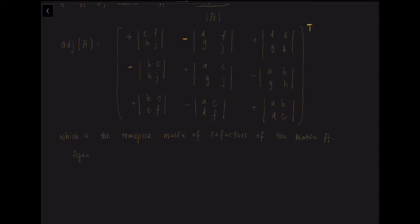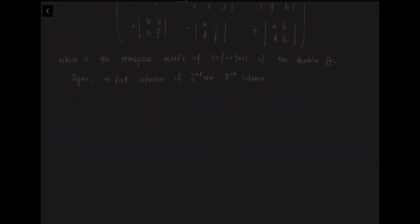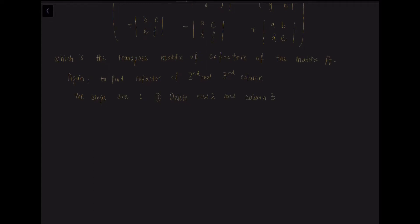Let's look at a more detailed explanation. Say we want to find the cofactor of the second row and third column. The first step is to delete the second row and the third column of matrix A. We cancel out those two rows, and we are left with A, B, G, and H. The second step is to form the determinant with those remaining components.